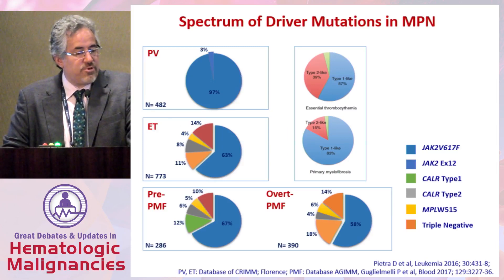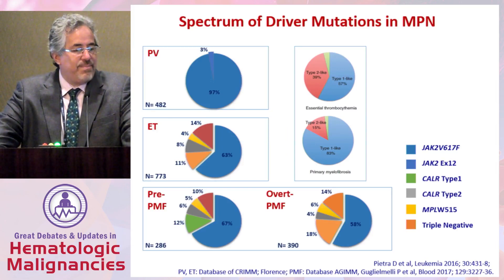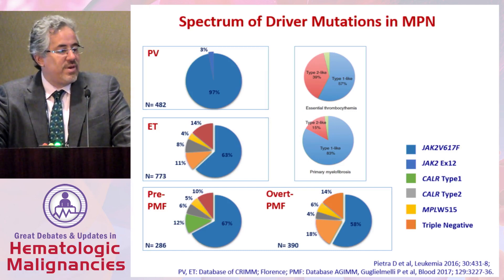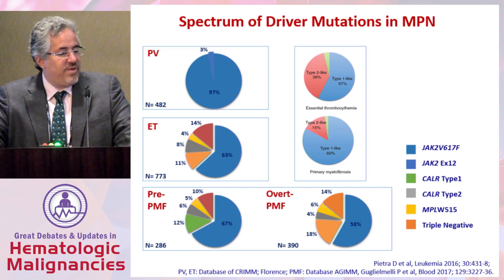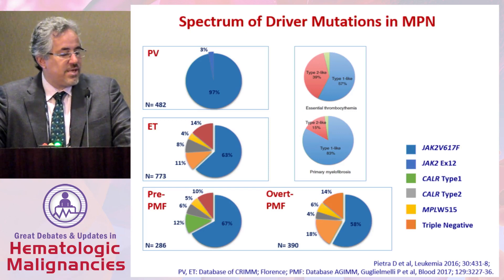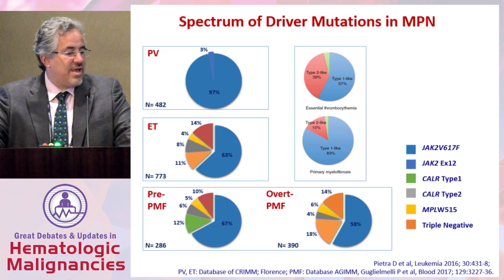As we think about the spectrum of these three driver mutations that help drive the MPN phenotype, in PV, triple negative is really not a player — everyone should have a JAK2 mutation. Triple negative is a concept primarily for ET and myelofibrosis. In ET, it represents a subset of perhaps 14% of individuals, with prognostic implications. In myelofibrosis, it is a group ranging from 10 to up to 15% or so.